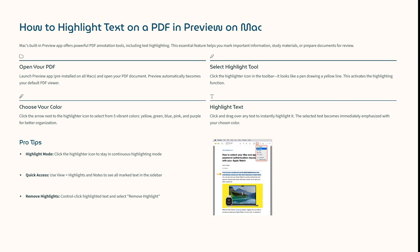Some pro tips: you can click the highlighter icon to stay in continuous highlight mode. Then use View and look for Highlights and Notes to see all marked text in the sidebar. You can also control-click highlighted text and select Remove Highlights if you want to remove all of the highlights.